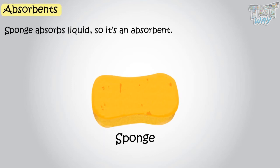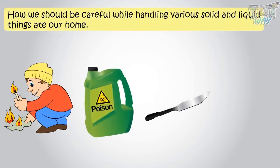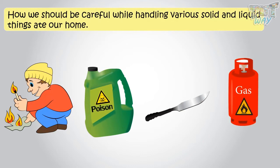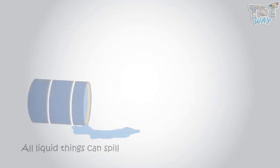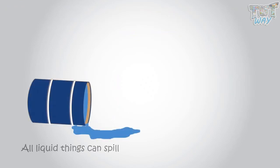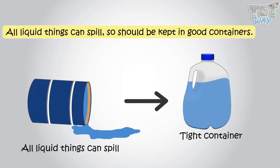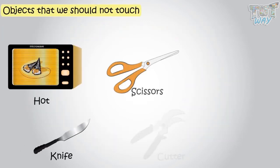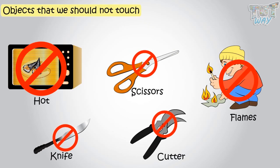Kids, now we will learn how we should be careful while handling different solid and liquid things at our home. Let's learn. First of all, all liquid things can spill, so all liquid things need good containers that prevent them from spilling or leaking. There are also some objects at our home that we should not touch. That is, let only your parents use them. Do not touch them when they are not home.